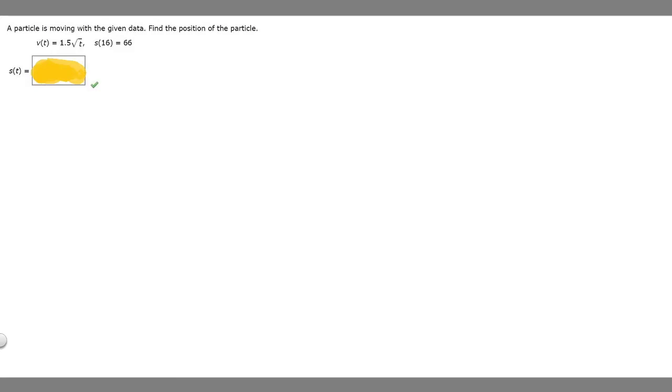So in this problem, we're told that a particle is moving with the given data, find the position of the particle. We're told that V(t) is equal to 1.5 times the square root of t, S(16) is equal to 66, and we're trying to find S(t).